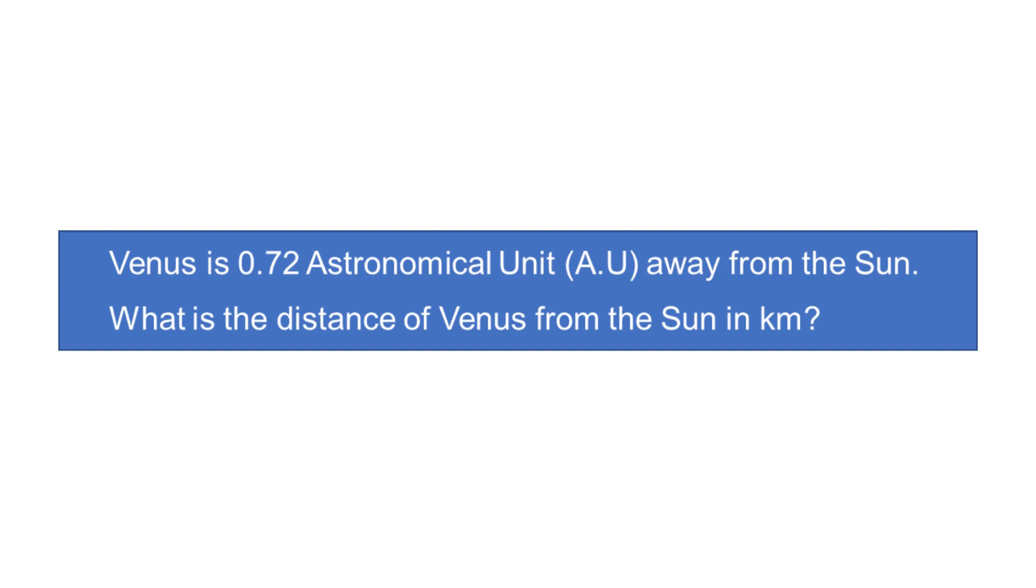Venus is 0.72 astronomical units (AU) away from the sun. What is the distance of Venus from the sun in kilometers?